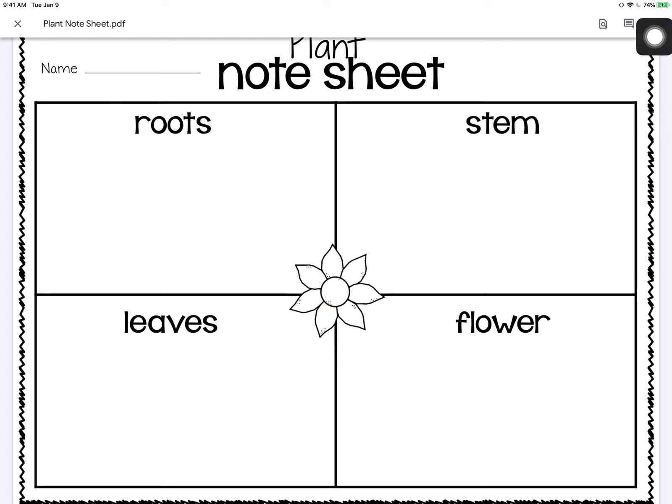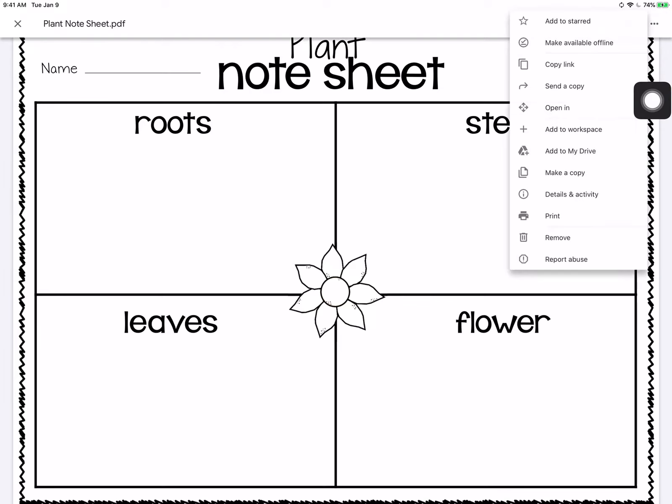The first step is I'm going to tap these three horizontal dots. Then I'm going to find Open In right here in the menu that comes up.